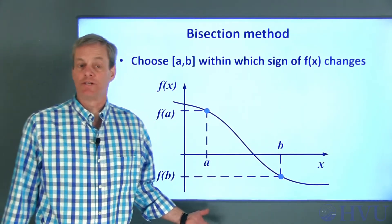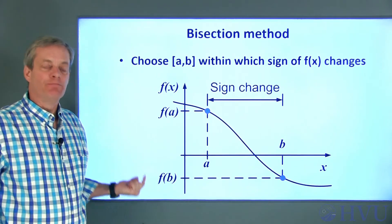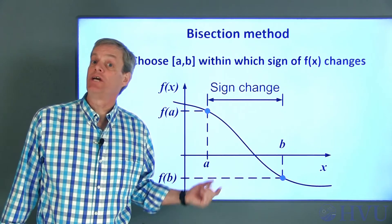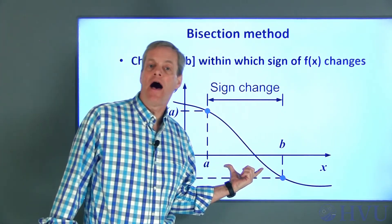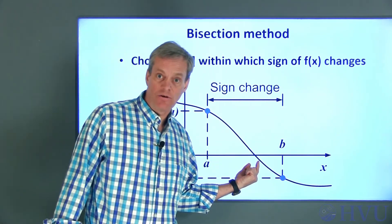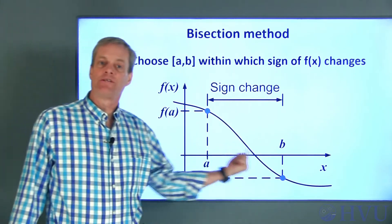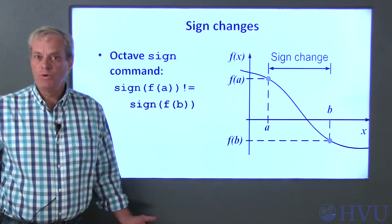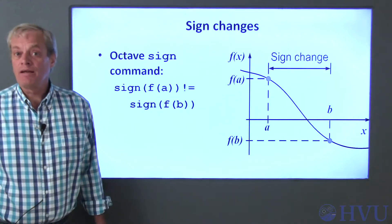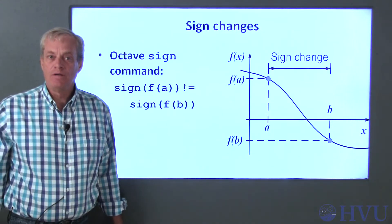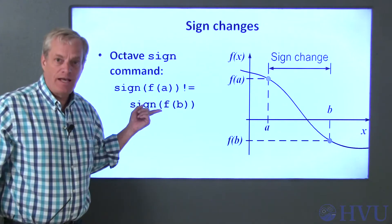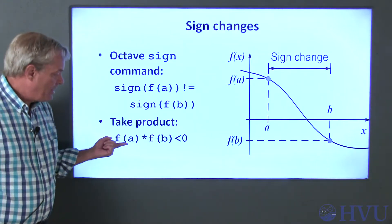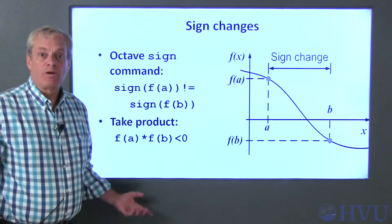First, we have to choose an interval within which the function is zero. We will use a simple criterion: look for a sign change between the two endpoints of the interval. Checking a sign change between the endpoints really just means there are an odd number of zero crossings in the interval, but we will assume it implies a single zero crossing. There are easy ways to check for a sign change in Octave. The sign command returns 1 if the argument is positive and -1 if negative, so if sign(f(A)) ≠ sign(f(B)), there must be a zero between A and B. Alternatively, if f(A) * f(B) < 0, there is a sign change.